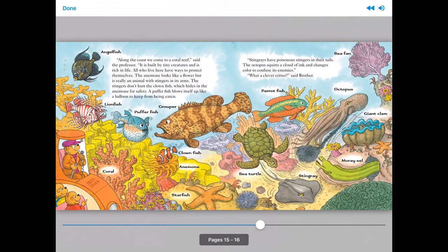Along the coast we come to a coral reef, said the professor. It is built by tiny creatures and is rich in life. All who live here have ways to protect themselves. The anemone looks like a flower, but is really an animal with stingers in its arms. The stingers don't hurt the clownfish, which hides in the anemone for safety. A pufferfish blows itself up like a balloon to keep from being eaten.